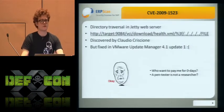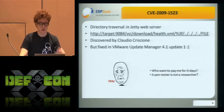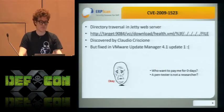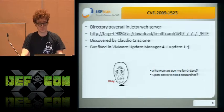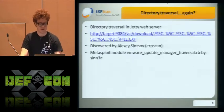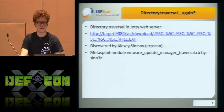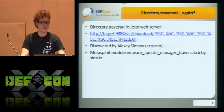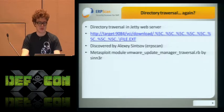The first thing we found in a public source was an old directory traversal, discovered by Claudio Criscione. It's a classic directory traversal, but it was fixed in our version — so that was bad. But Alexei Sinsov didn't trust any fix or patch, and after a few minutes he found another directory traversal almost in the same place. Now there are Metasploit modules for this directory traversal.